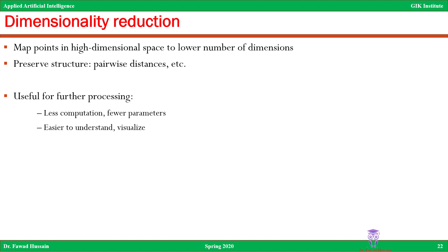So what is dimensionality reduction? It is the process of mapping points in higher dimensional space to a lower number of dimensions, such that you preserve as much of the structure as possible. When we say the structure of the data, we are referring to things like pairwise distances. If there are three vectors — one, two, and three — and the distance between one and two was higher than between two and three, you wish to reduce the number of dimensions but keep this property, so even in the reduced dimension the distance between one and two should be higher than between one and three.